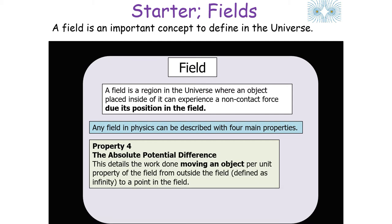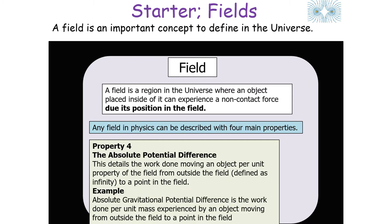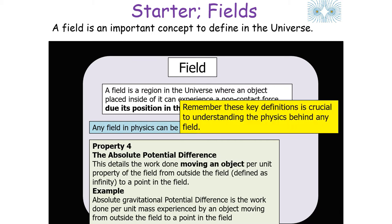The absolute potential difference details the work done moving an object per unit property of the field from outside the field, or infinity, to a point inside the field. For example, the absolute gravitational potential difference is the work done per unit mass experienced by an object moving from outside the field to a point in the field. Remembering these definitions is crucial to understanding the physics behind any field.